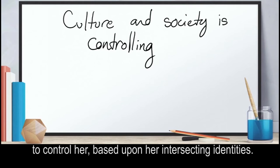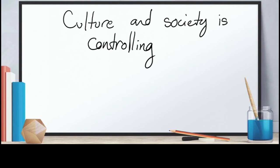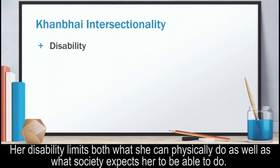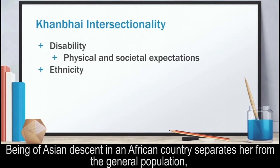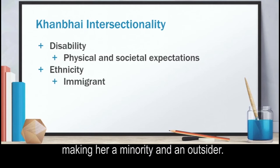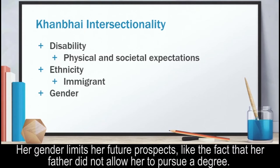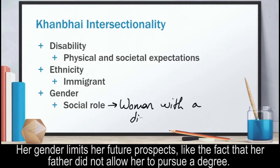Based upon her intersecting identities. Her disability limits both what she can physically do, as well as what society expects her to be able to do. Being of Asian descent in an African country separates her from the general population, making her a minority and an outsider. Her gender limits her future prospects, like the fact that her father did not allow her to pursue a degree.